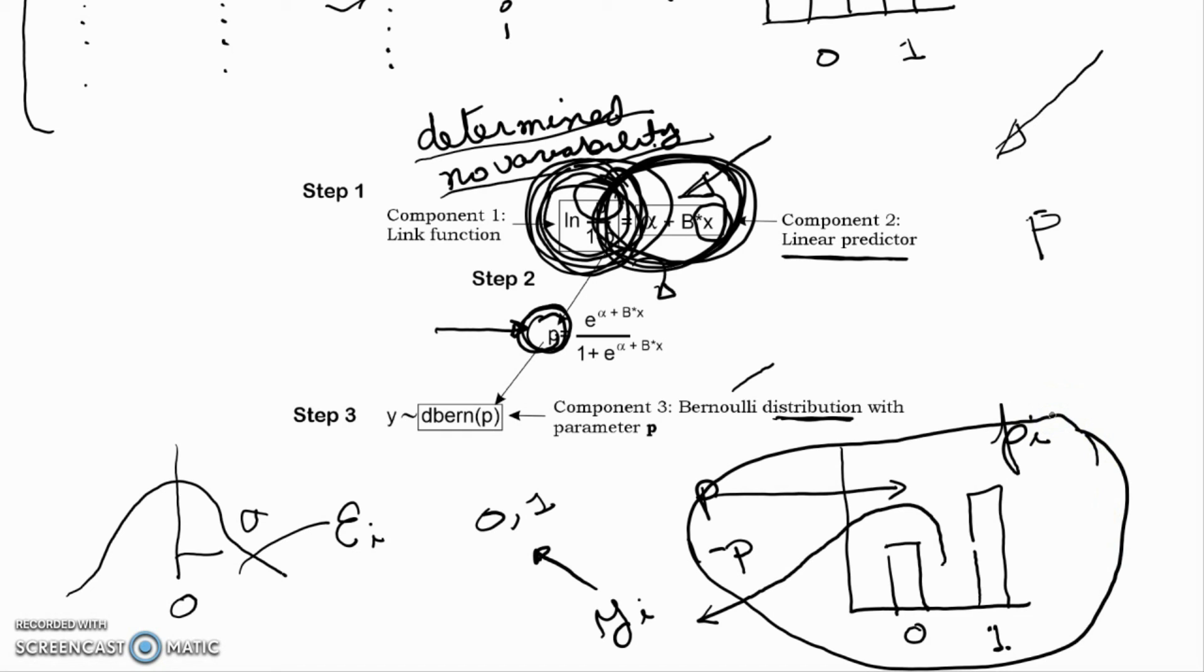Bottom line, three components of a generalized linear model. Link function, linear predictor, and a distribution, and how we add variability. It isn't going to be the way you've seen typically so far. It's going to be by withdrawing a particular value at random from some sort of a distribution that has a parameter, in this case p, that's been predicted by our model.